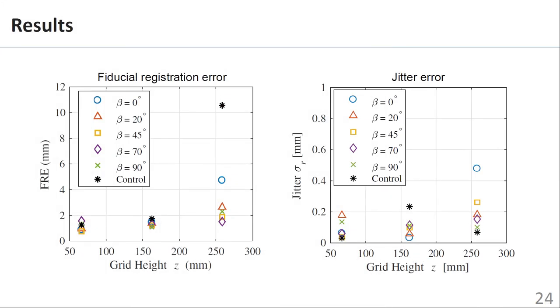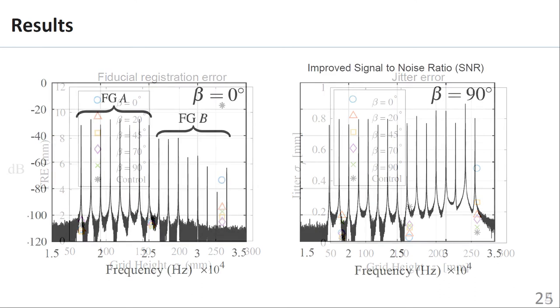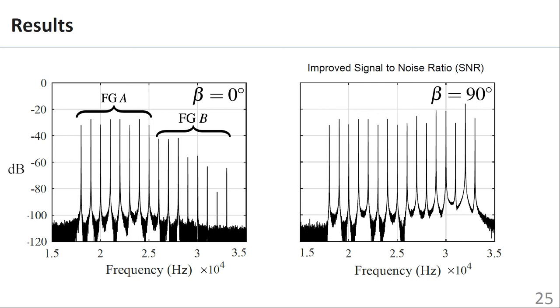The following plots show the total fiducial registration error and jitter error for various tilt angles beta. Control measurements were performed using a single field generator A. In general, it can be seen that increasing the tilt angle reduces the total system jitter and fiducial registration error. This improvement correlates with an improvement in overall system signal-to-noise ratio.